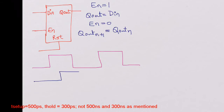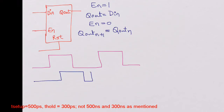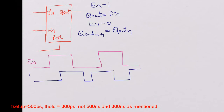I take DN high sometime here, then take it low again when it goes low, and then take it back high again. And then take it low before the falling edge, and take it high after the falling edge again. So this is the DN waveform. Let me write the signal names here: this is enable, and this is DN.